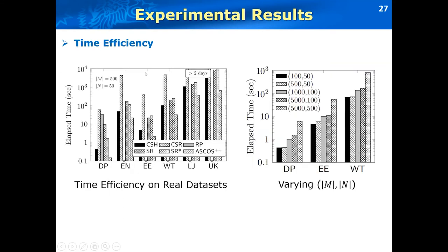The second type of experiment is the time efficiency on real data sets. We can see on each data set, our algorithm is significantly faster than the existing competitors due to our rank one factorization and the right-to-left parentheses. This is the effect of varying the size of M and N for partial pair queries. When the M and N grows, we can see the time is growing linearly, which agrees well with our expectations.